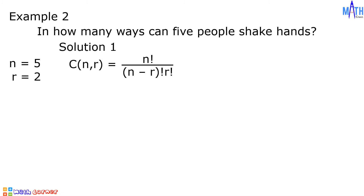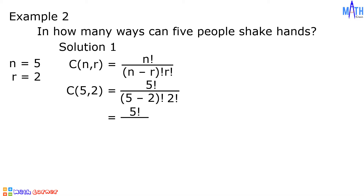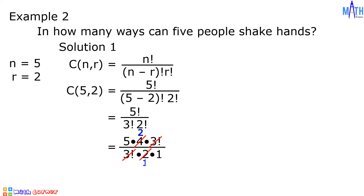Solution number 1: using this formula, the combination of 5 taken 2 at a time is equal to 5 factorial over the quantity 5 minus 2 factorial times 2 factorial, which equals 5 factorial over 3 factorial times 2 factorial. Expanding: 5 times 4 times 3 factorial, all over 3 factorial times 2 times 1. Cancel out 3 factorial. 4 and 2 are divisible by 2: 4 divided by 2 is 2, and 2 divided by 2 is 1. Multiply the remaining factors: in the numerator, 5 times 2 is 10; in the denominator, 1 times 1 is 1. 10 divided by 1 is 10. There are 10 ways.